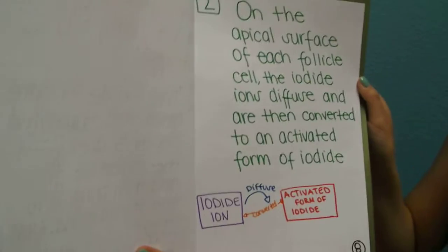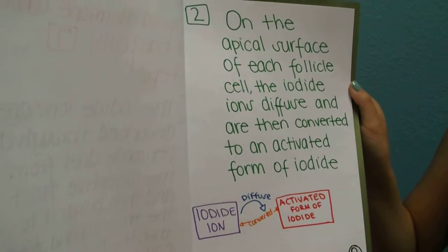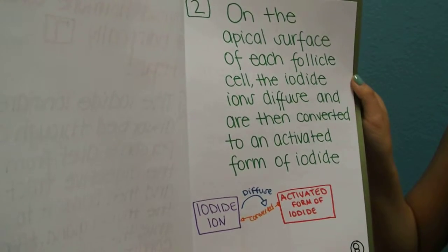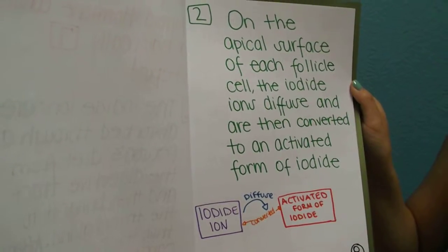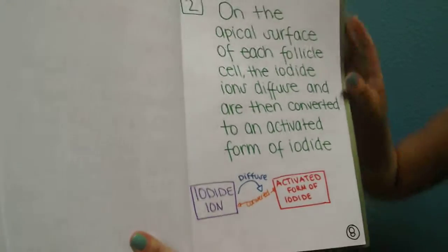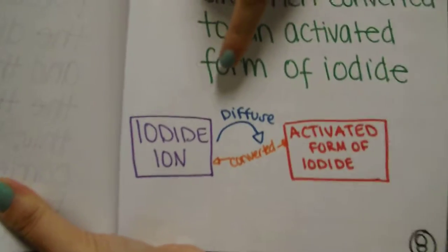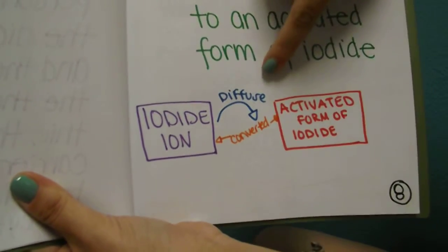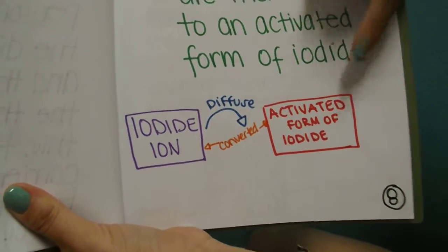In step two, on the apical surface of each follicle cell, the iodine ions diffuse and are then converted to an activated form of iodide. So here we have the original iodine ion. They diffuse and then convert it to an activated form of iodide.